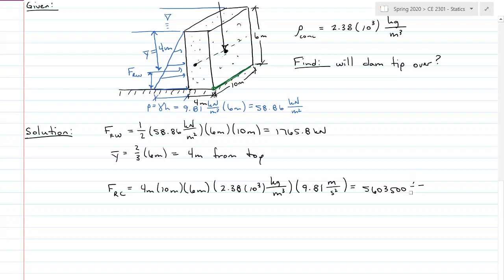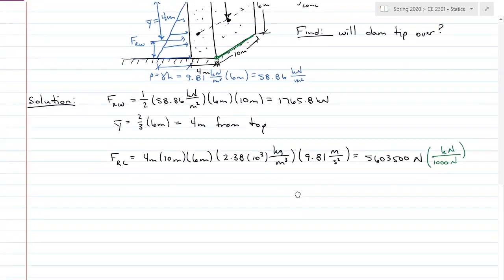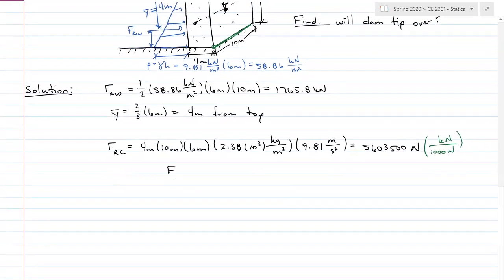And this is going to give me 5,603,500 newtons. We've got a force, newtons. Kilonewtons, there is 1,000 newtons in a kilonewton. So my force resultant concrete is equal to 5,603.5 kilonewtons. Now we have kilonewtons and kilonewtons, we can compare apples to apples.